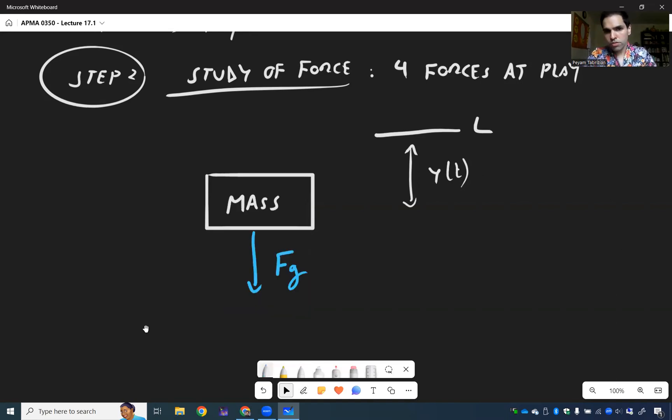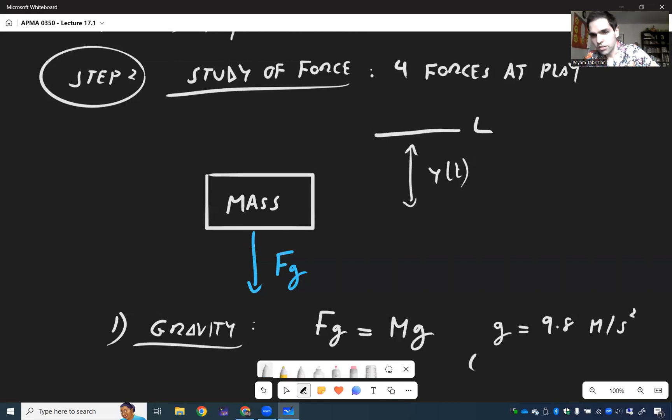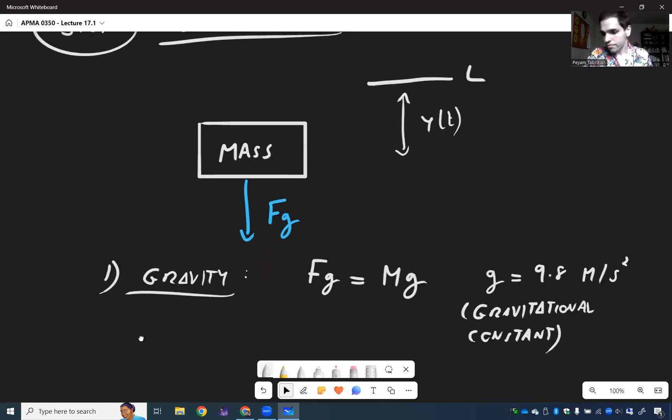So if you think of it vertically, well, there is a force pushing the mass down, which is gravity, and that's what we call FG. So we'll always come back to this. So one force is gravity. Of course, the force pulling the string down. And in this case, FG is given by mass times gravitational constant, where g is I think 9.8 meters per second squared, gravitational constant.